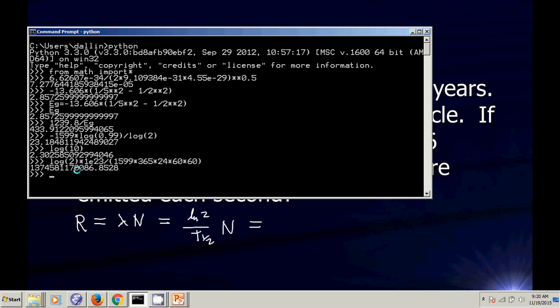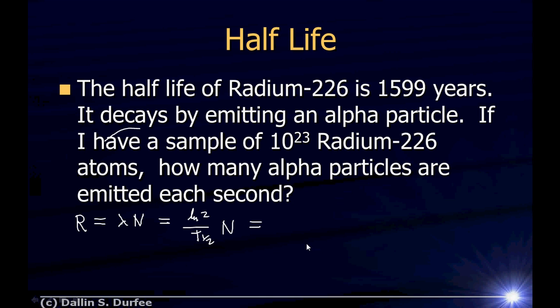So, how many? 1.37 times 10 to the 12th. 1.37 times 10 to the 12th decays per second. Okay, that's our example problems.